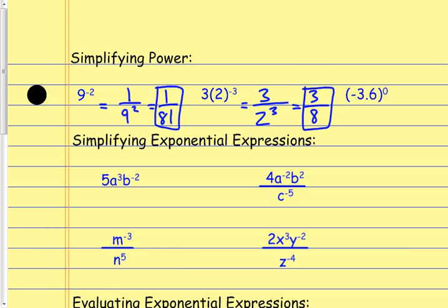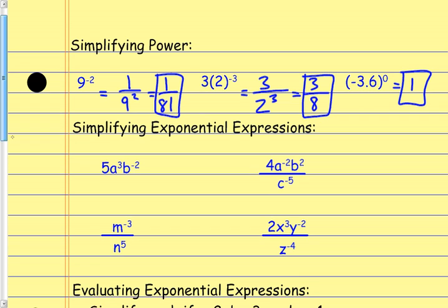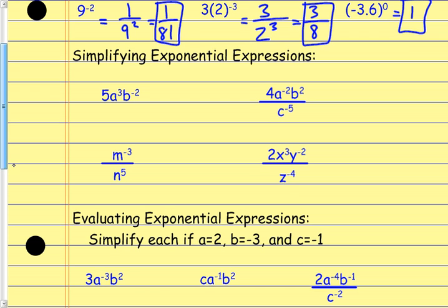And this last one — negative 3.6 in parentheses to the 0 power is going to equal 1. So using these rules of exponents when simplifying an expression, let's see what that looks like.